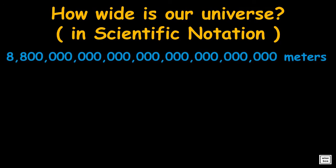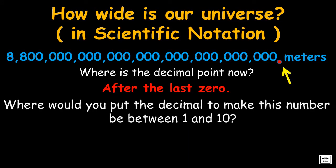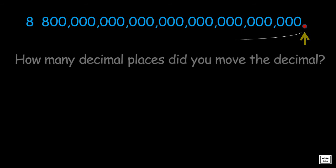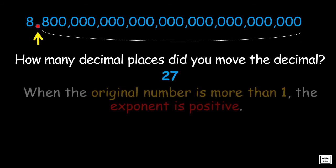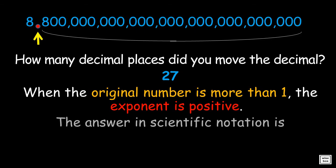Going back to the size of the universe, notice that the decimal is after the last zero. To make this number between 1 and 10, we should put the decimal between the two eights. What we did is move the decimal point 27 places. And since the original number is more than 1, the exponent in the scientific notation must be positive. Thus, the answer is 8.8 times 10 to the power 27.